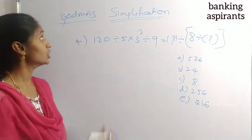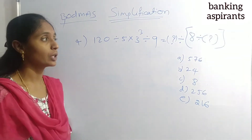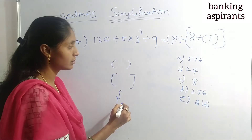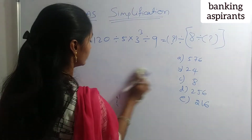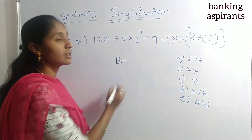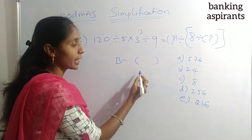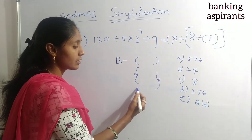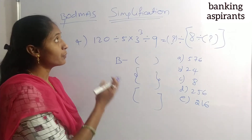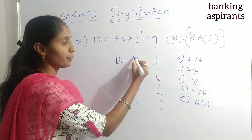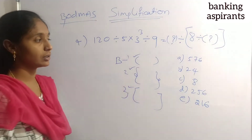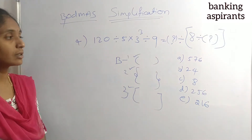According to the BODMAS rule, B indicates Bracket. There are three types of brackets used in simplification: curved brackets ( ), curly brackets { }, and square brackets [ ]. While solving simplification questions, we should clear curved brackets first, then curly brackets, then square brackets — follow this sequence.